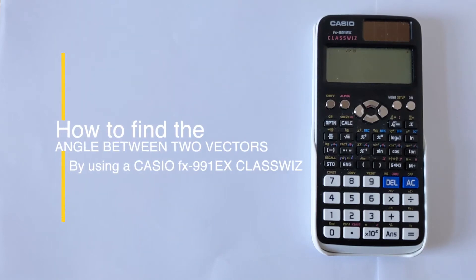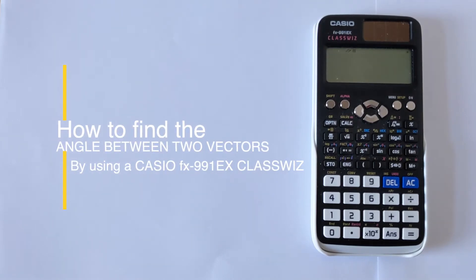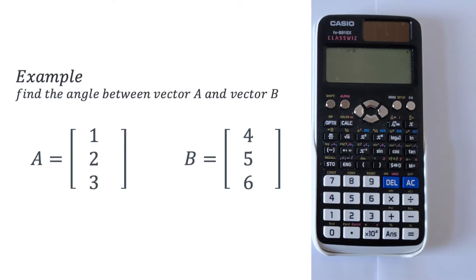In this video, I'm going to show you how to find the angle between two vectors using a Casio ClassWiz calculator. We're going to look at a simple worked example today.